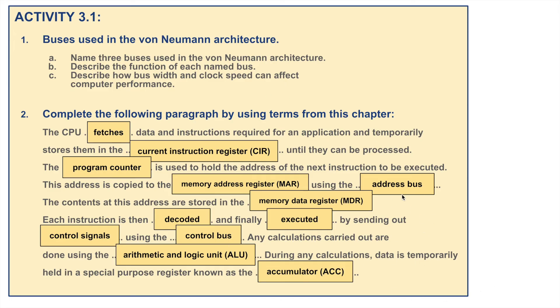So that is it. That is Activity 3.1. Nice and easy. This bit is rather complicated. You've really got to know your way around the CPU and Von Neumann Architecture.